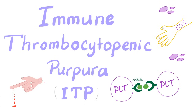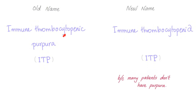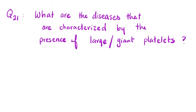Hey, it's Medicosis Perfectionalis, where medicine makes perfect sense. Today we'll talk about immune thrombocytopenic purpura, or ITP. The old name was immune thrombocytopenic purpura; it was also called idiopathic thrombocytopenic purpura. Now we call it immune thrombocytopenia — same acronym. We call it immune thrombocytopenia instead of immune thrombocytopenic purpura because many patients do not actually have the purpura.